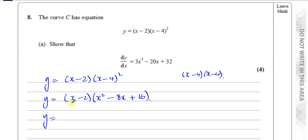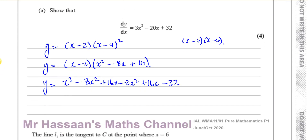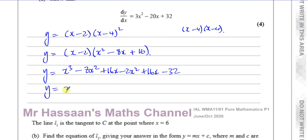Now we expand the full bracket: x times x² is x³, x times -8x is -8x², x times 16 is 16x, then -2 times x² is -2x², -2 times -8x is +16x, and -2 times +16 is -32. Combining like terms: x³, then -8x² - 2x² = -10x², then 16x + 16x = +32x, and -32. So y = x³ - 10x² + 32x - 32.